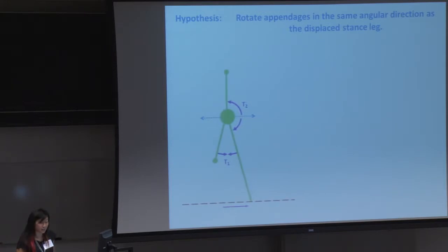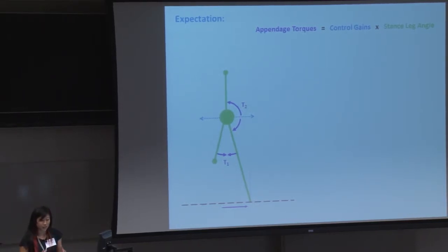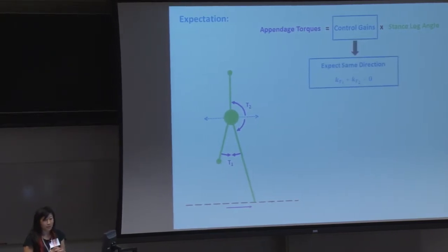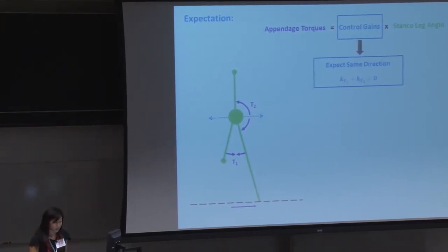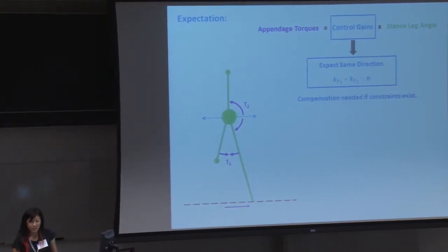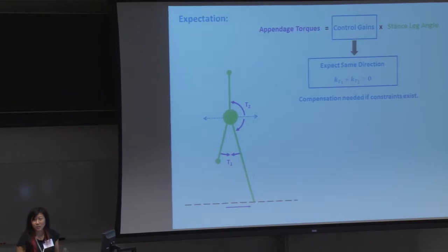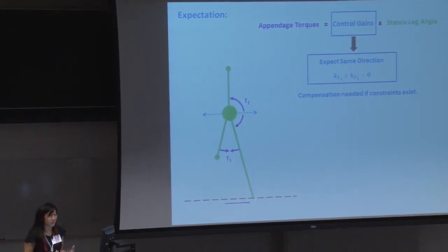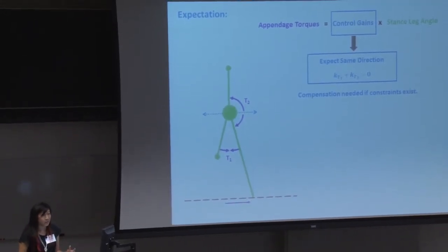So there's another way we can think of this. So if you want to write some sort of control law, what is the relationship between your appendage torques and your stance leg angle? You can look at the control gains. So you want them to act in the same direction. So in that case, you expect that if in the same direction your control gains are positive. We also think that if you were to restrict one of your appendages, your gains won't necessarily be the same, and so you need some sort of compensation strategy to compensate for the constraint.